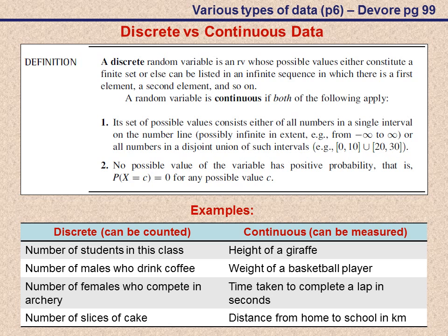A discrete random variable is a random variable whose possible values either constitute a finite set or else can be listed in an infinite sequence in which there is a first element, a second element, and so on. What that basically in plain and simple terms means is that we have something that can be counted. There's only a finite or set number of possibilities or we can have an infinite number of possibilities but at set intervals.